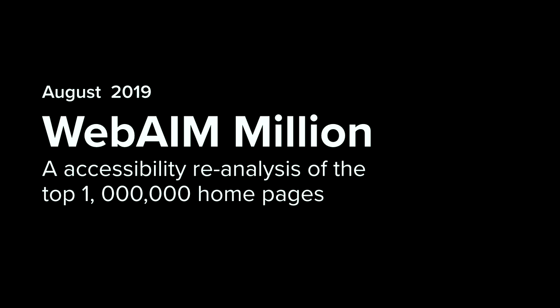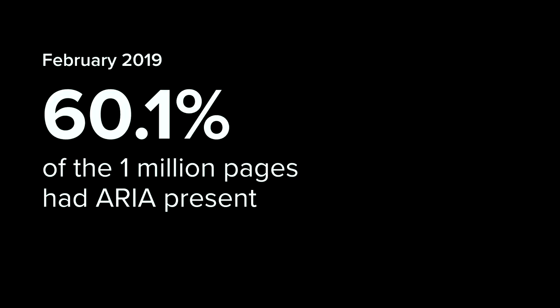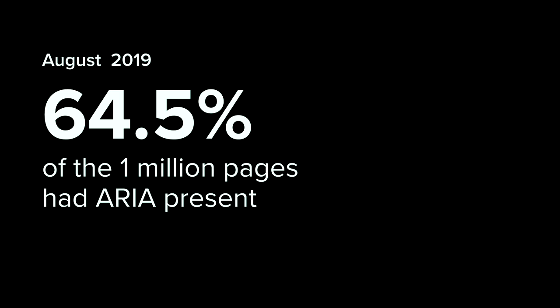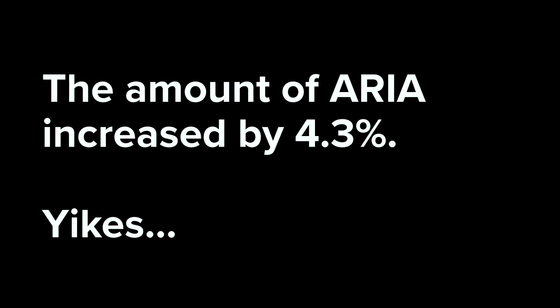Six months later, WebAIM did a reanalysis of those same one million homepages. Who thinks things got better? Crickets. The amount of ARIA on the pages increased by 4.3%. Yikes. So while developers have good intentions when trying to fix their errors, they actually made the accessibility of those pages worse because they're implementing things incorrectly.